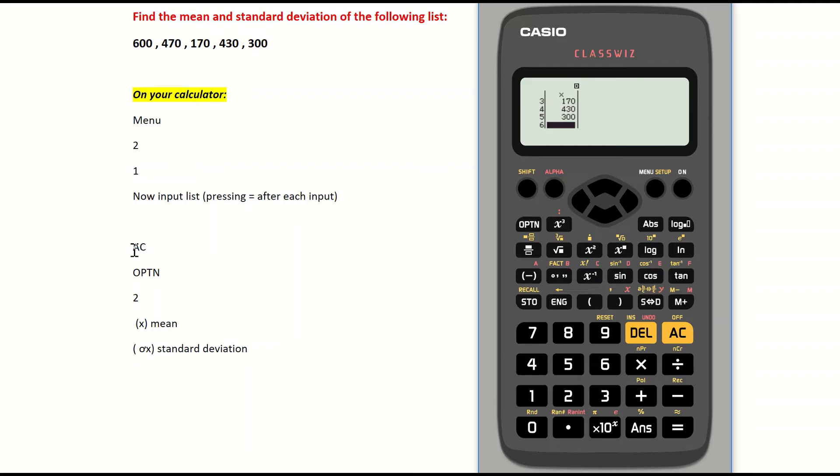Now press the AC button in order to save that data on the calculator. Your screen should then go blank, displaying 'statistics one variable'.